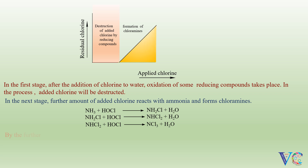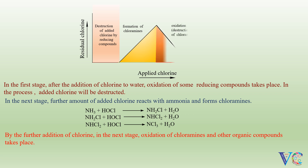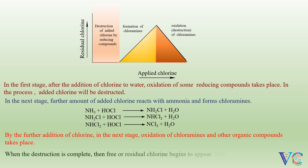In the next stage, oxidation of chloramines and other organic compounds takes place. When the destruction is complete, then free or residual chlorine begins to appear. This is called breakpoint chlorination.